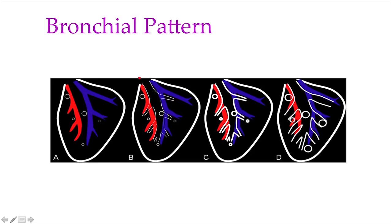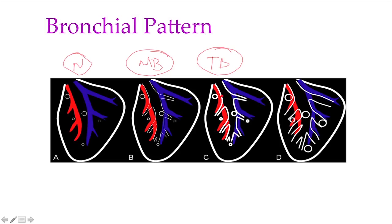In bronchial pattern, we can see on this drawing the normal appearance — a few bronchi with the lung loose and vessels visible. When we have mineralized bronchi, a very common age-related change, we can see the walls of the bronchi, though they are not particularly thick, and we can see them end-on. The bronchi still taper and become thinner towards the periphery. Then we have thick bronchi, where the bronchial walls look much thicker, either end-on or longitudinal, looking like tramlines or donuts with a hole in the middle.